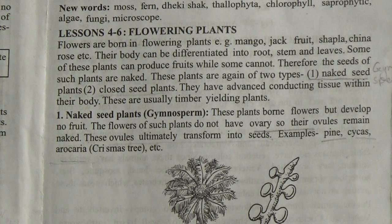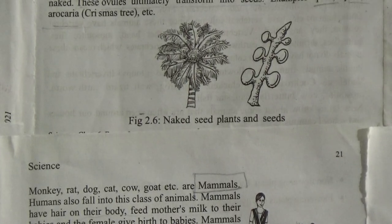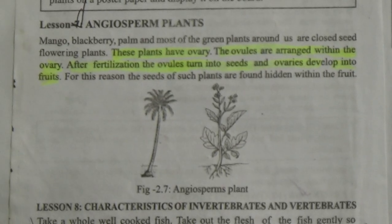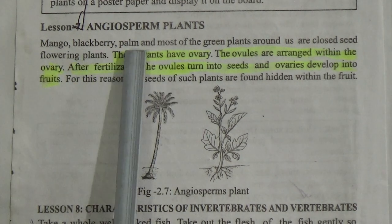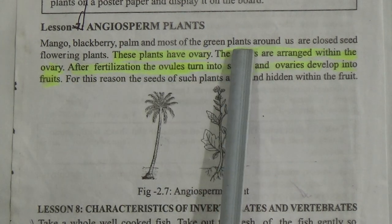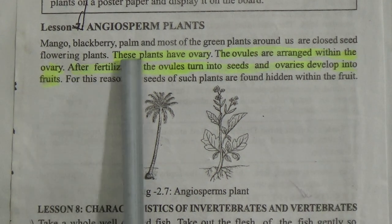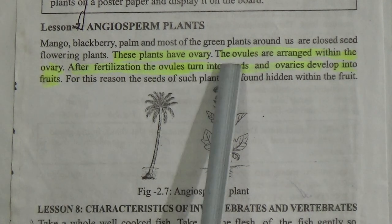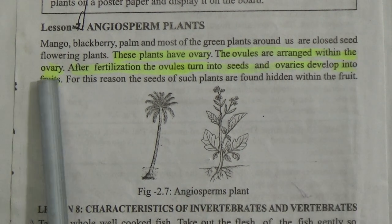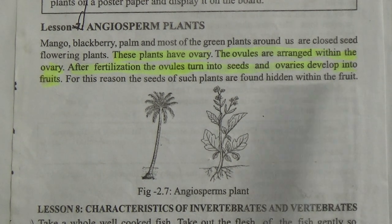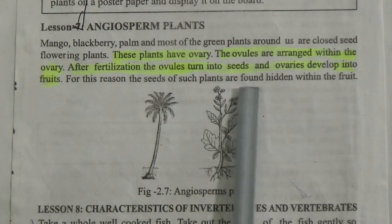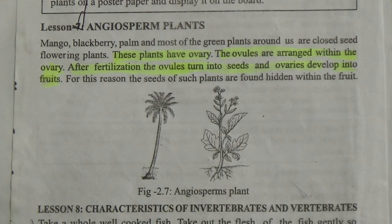Here is the figure of a naked seed plant and its seeds. This is page number 18. Lesson 7: Angiosperm plants. Mango, blackberry, palm, and most of the green plants around us are closed seed flowering plants. These plants have ovaries. The ovules are arranged within the ovary. After fertilization, the ovules turn into seeds and the ovaries develop into fruits. For this reason, the seeds of such plants are found hidden within the fruits.